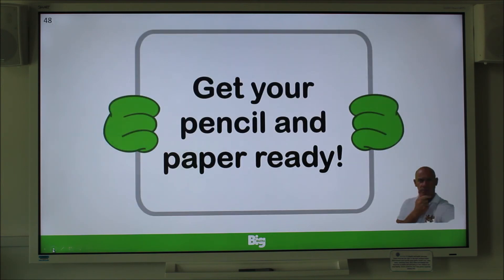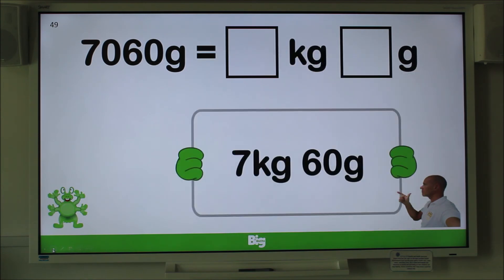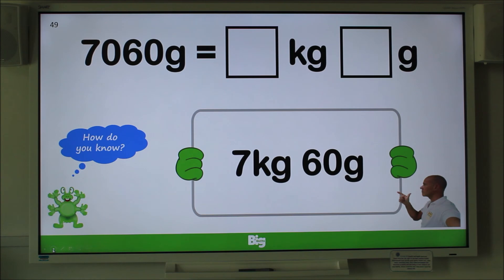Pencil and paper ready? Here comes question 8 — remember to explain how you did it to an adult. Try this one: 7,060 grams. Be careful when writing the amount of grams. Remember to pause the video. We have 7 kilograms but no hundreds and only 60 grams. So the answer is 7 kilograms and 60 grams. Is that what you had as well? Well done.